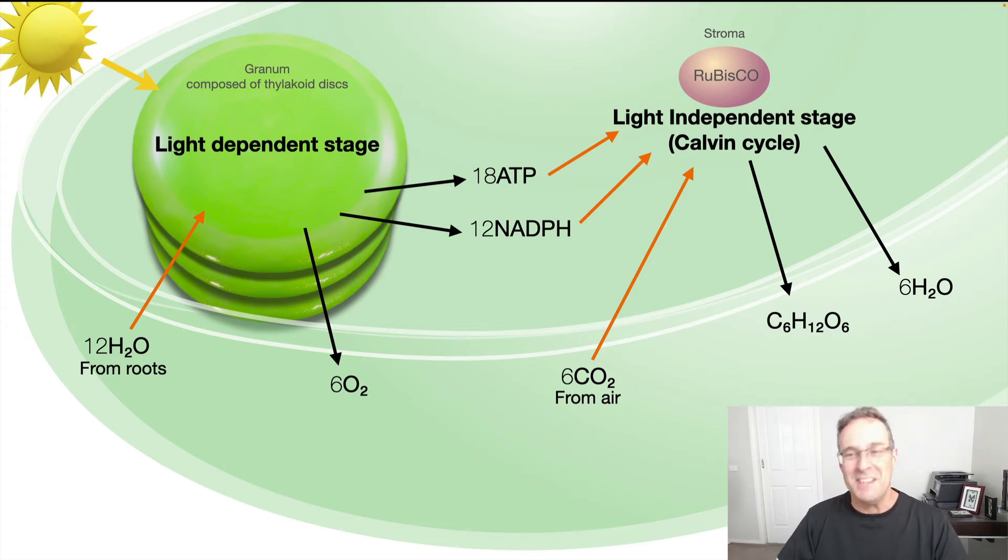So you can understand with a name that long, it's actually a really great name. It really does exactly describe what rubisco does. But you can understand that with a name that long, it's not surprising that most people just refer to it as rubisco. It rolls off the tongue a lot easier. On my diagram here, this shows the inputs and outputs of both the light-dependent stage and the light-independent stage of photosynthesis. But you'll notice some of the arrows are orange.